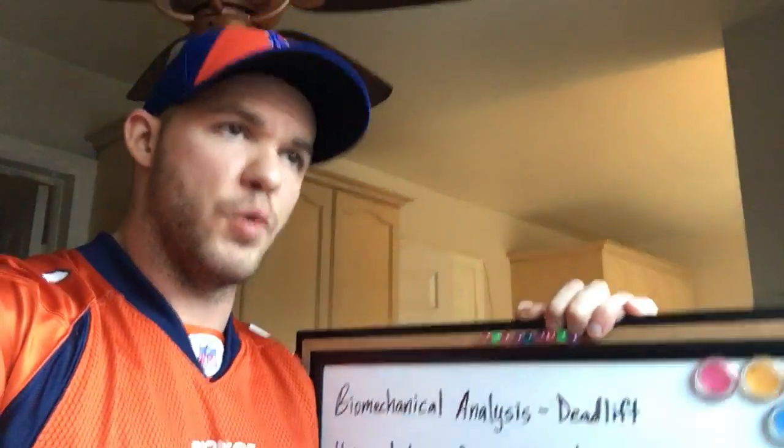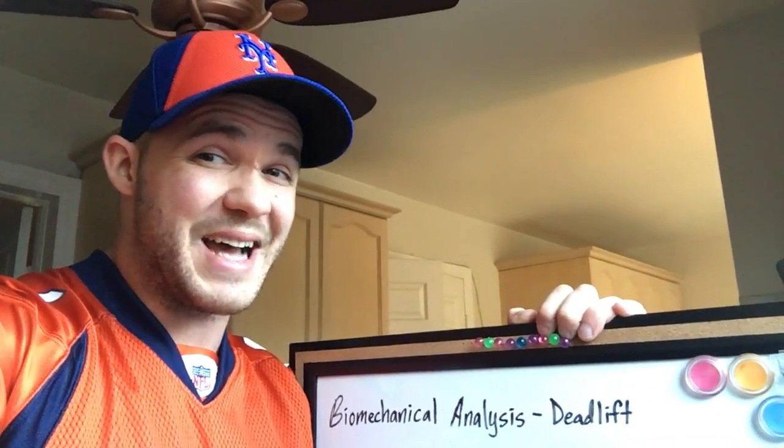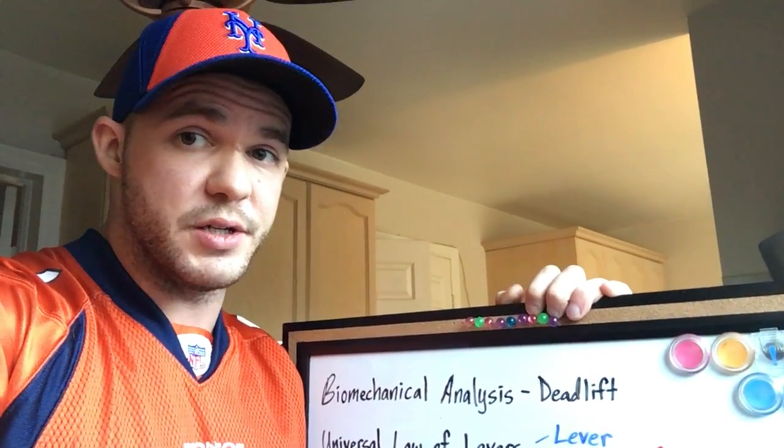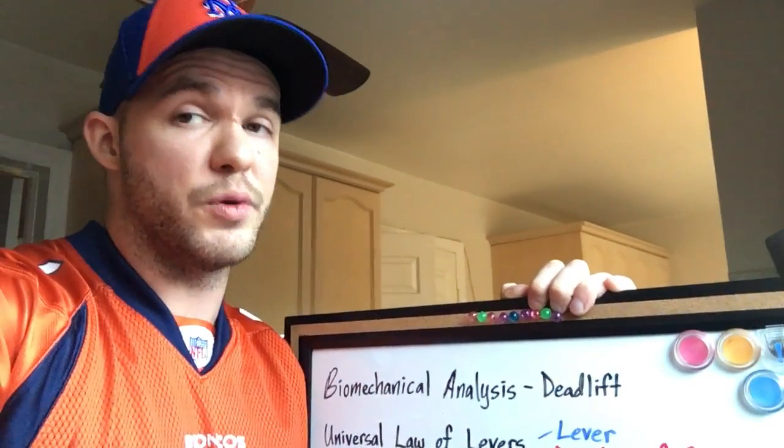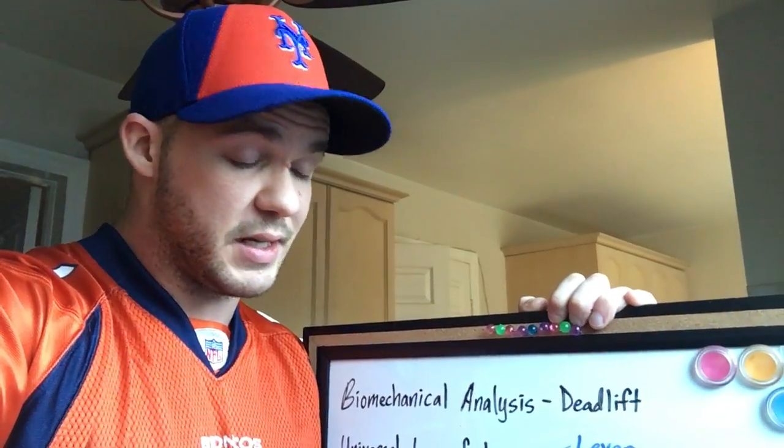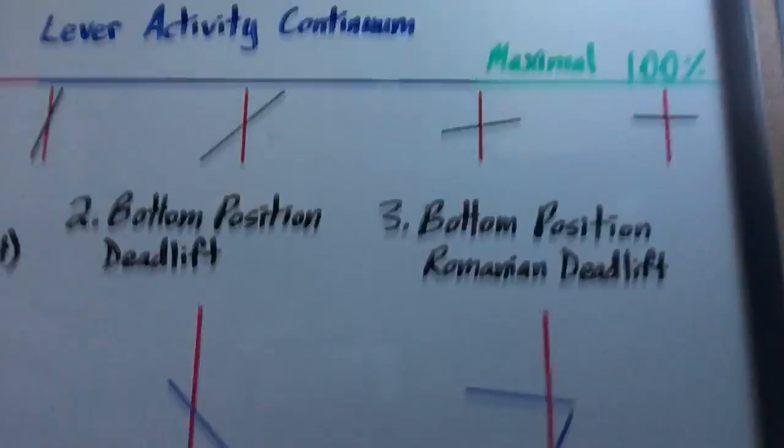The muscle capacity to produce force is greatest when a muscle is at or near its mid range. When it's at its longest and shortest ranges, its capacity to produce force is reduced. So since the main muscle groups responsible for extending the hip in the deadlift are the glutes and the hamstrings, we've got to take a look at these muscles and what's happening here.